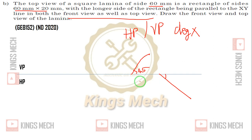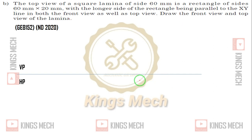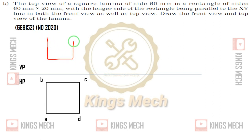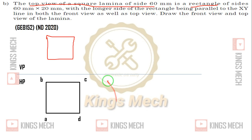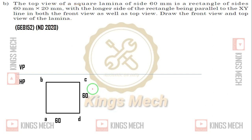What we are doing here in the problem is simply: the lamina and the view will be the same. So this can be a square on HP. The top view of a square lamina is a rectangle — that's how the top view will be a rectangle. The top view is at the bottom, so the rectangle is a rectangle. The square is 60 by 60.